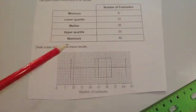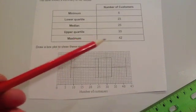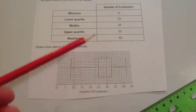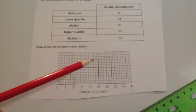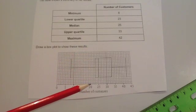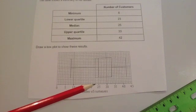What I've done is I've drawn a line for the minimum at 8, a line for the maximum at 42, and a line for the lower quartile at 23. I'm making sure that you know exactly where 23 is.